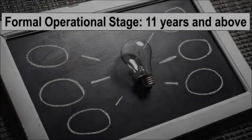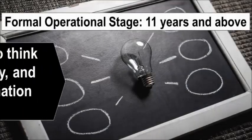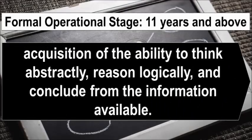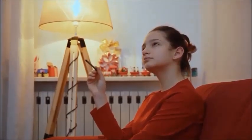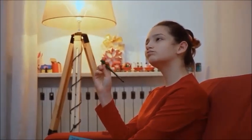The formal operational stage is the final stage of cognitive development theory. This stage, which follows the concrete operational stage, commences at around 11 years of age or puberty and continues into adulthood. It is characterized by the acquisition of the ability to think abstractly, reason logically, and draw conclusions from the information available. At this point, people become capable of seeing multiple potential solutions to problems and think more scientifically about the world around them.